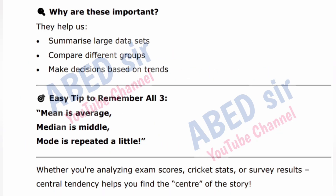Why are these important? They help us: summarize large data sets, compare different groups, and make decisions based on trends. Easy tip to remember all three: mean is average, median is middle, mode is repeated a little. Whether you are analyzing exam scores, cricket stats, or survey results, central tendency helps you find the center of the story.